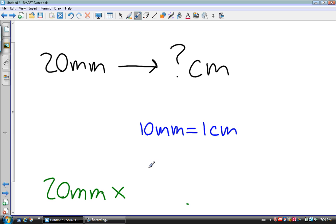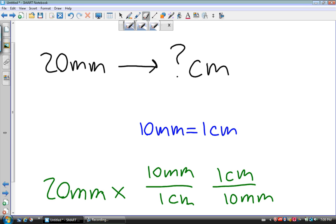I could write this rate in two ways: 10 millimeters over 1 centimeter, or 1 centimeter over 10 millimeters. Only one of these is correct. The way to remember which way to write your rate is you want the units that you want on top, and the units that you don't want on the bottom. In this case, I don't want millimeters and I do want centimeters. So this isn't the correct way to write my rate. This would be the correct way.